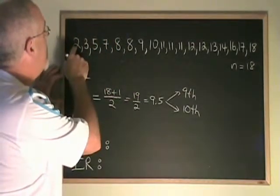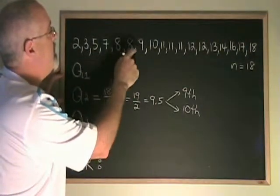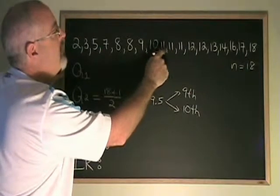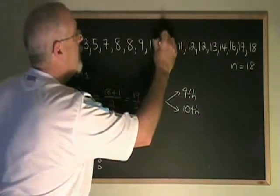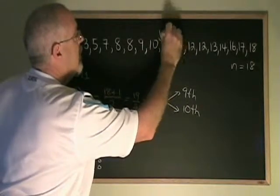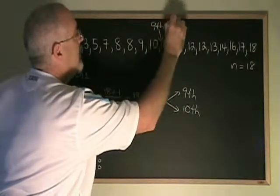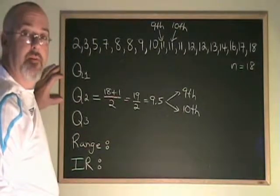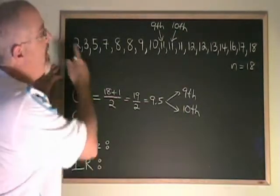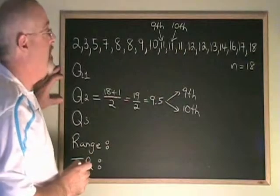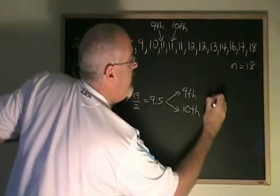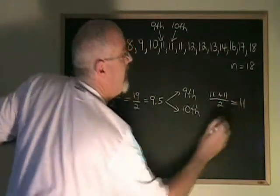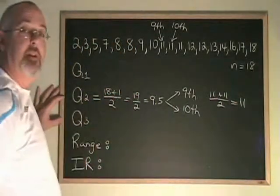Counting from here, our 9th and 10th data values are these two 11s. We find the average of these two values to find our median when we have an even number of data values. So the average of 11 and 11 is 11 plus 11 over 2, and it's equal to 11. Our Q2 for this data is 11.